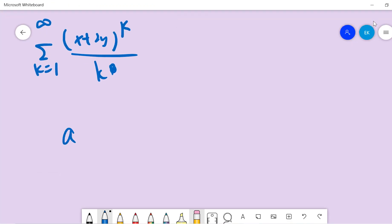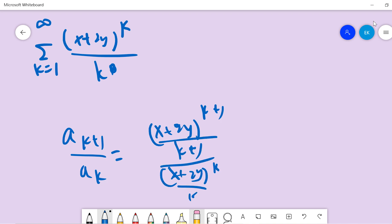And we calculate the ratio. So this is (x+2y)^(k+1) divided by (x+2y) to the power of k over k. So this is (k+1)/k times (x+2y), and the way the limit k goes to infinity, this term is one.